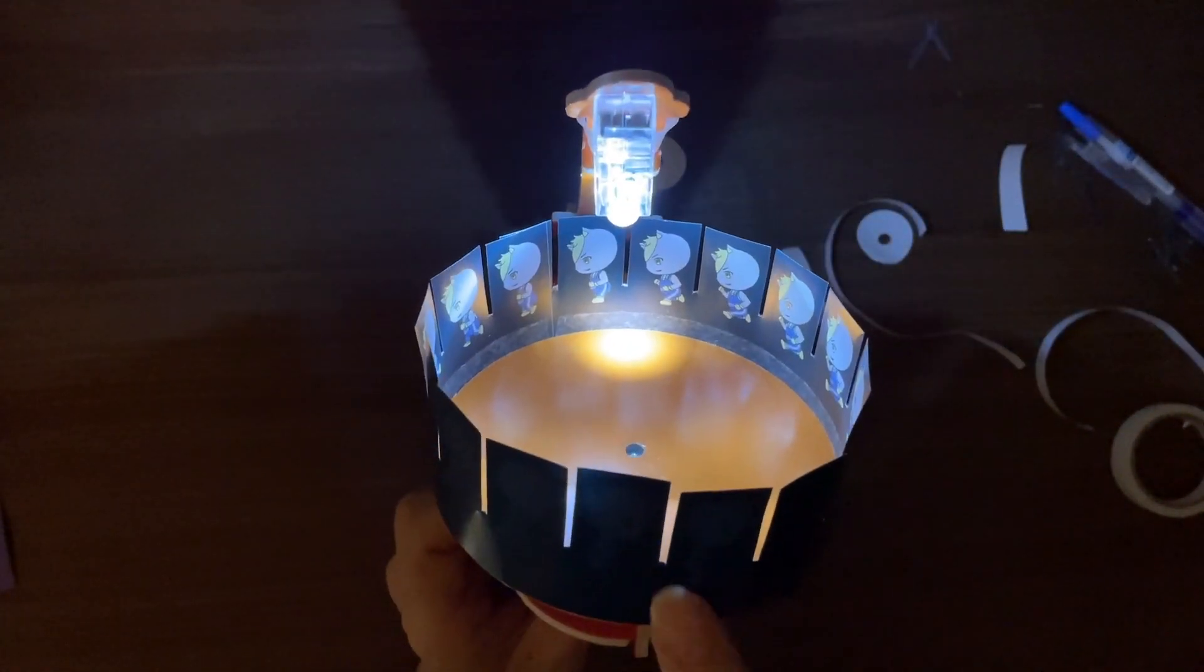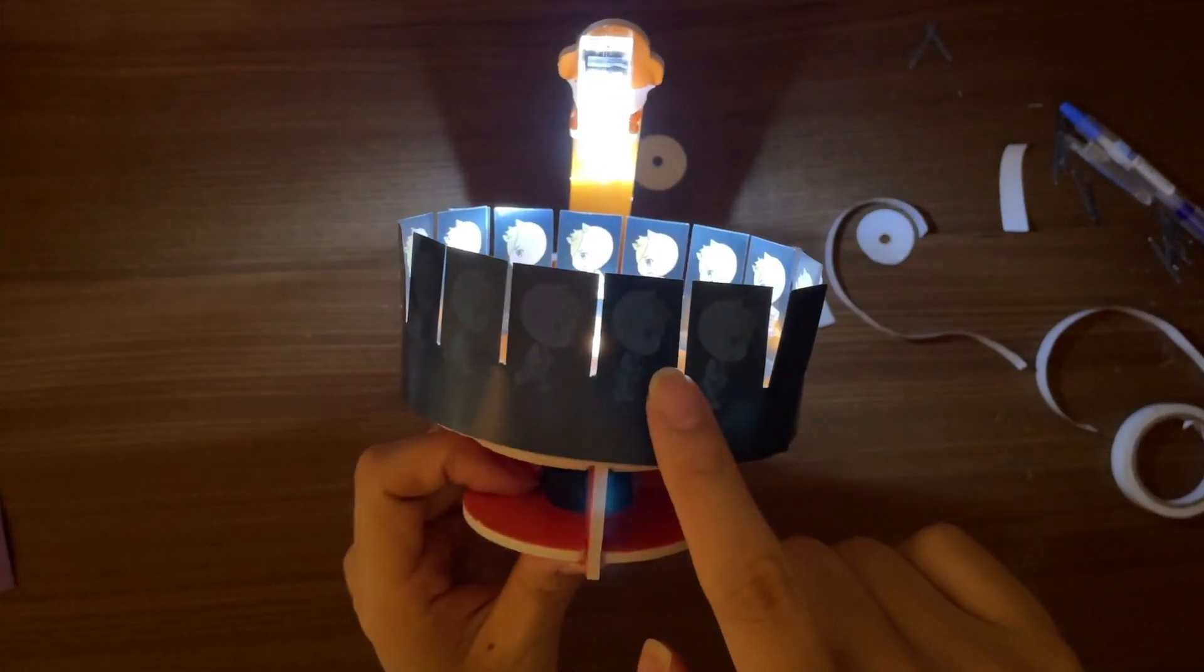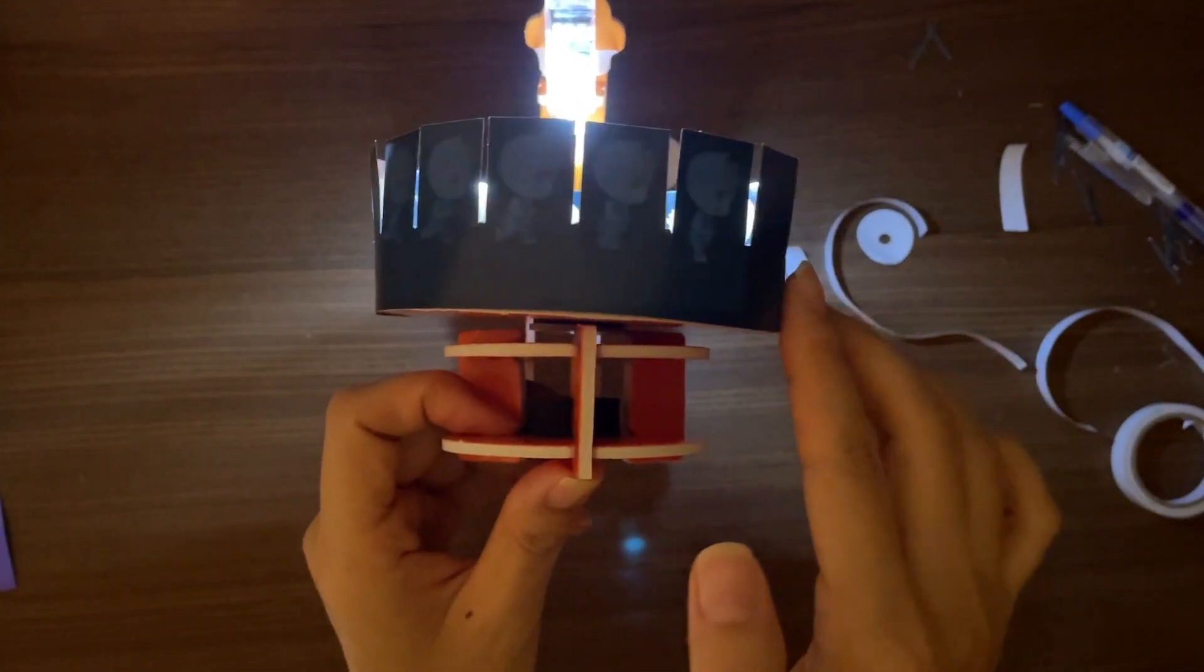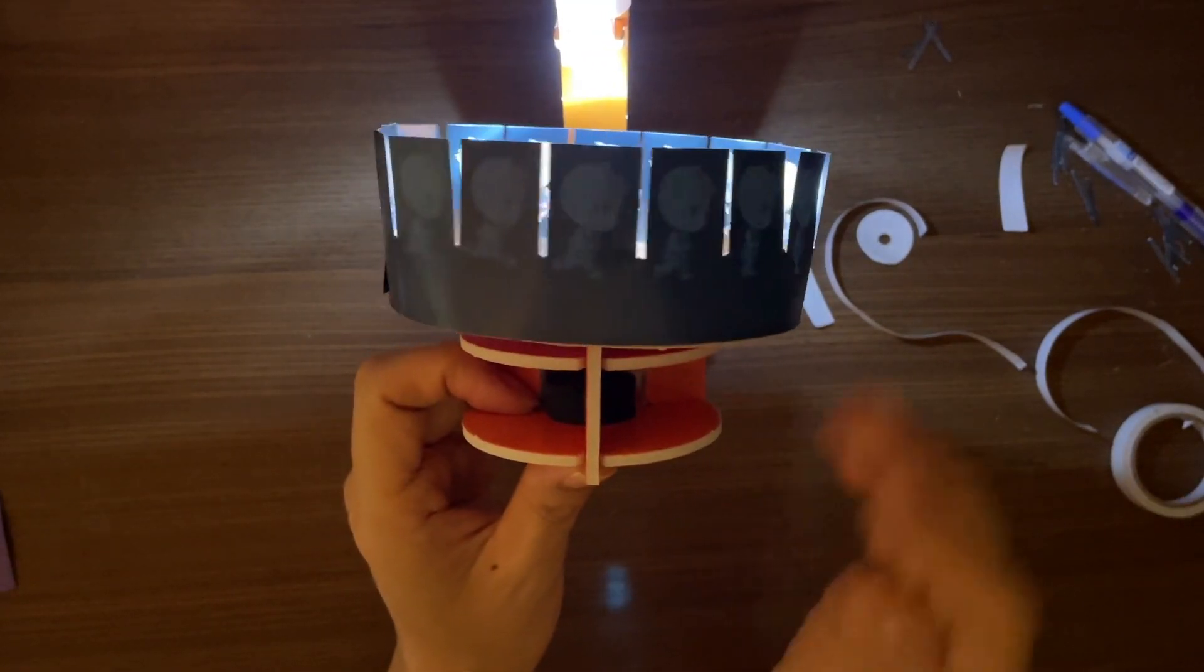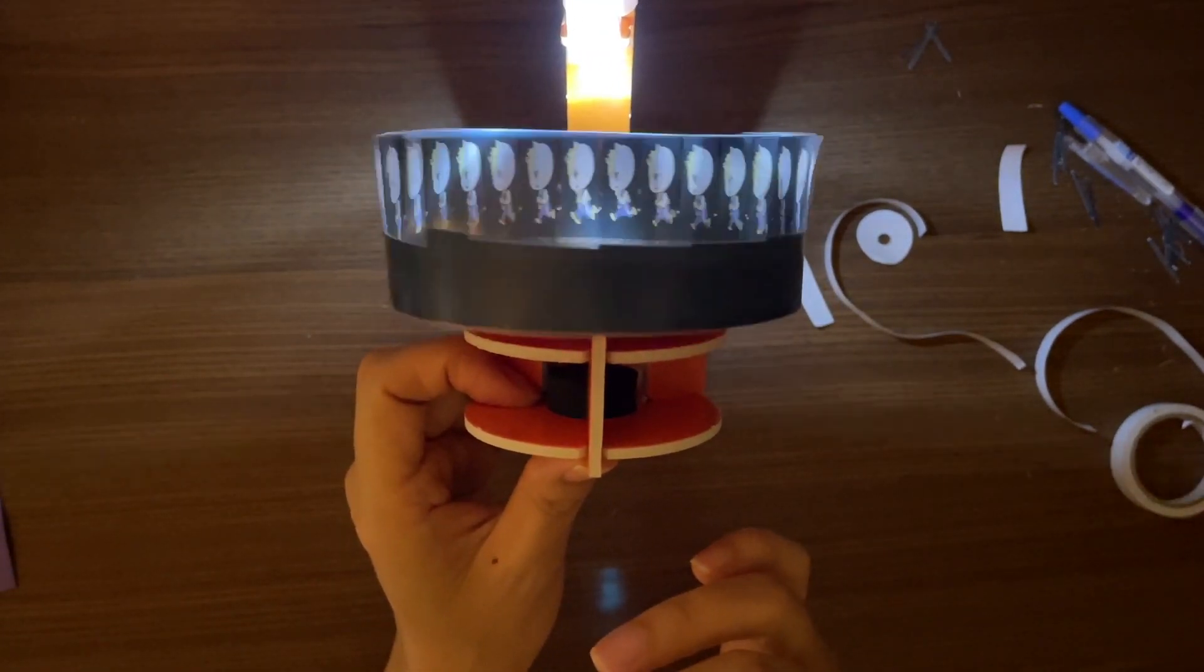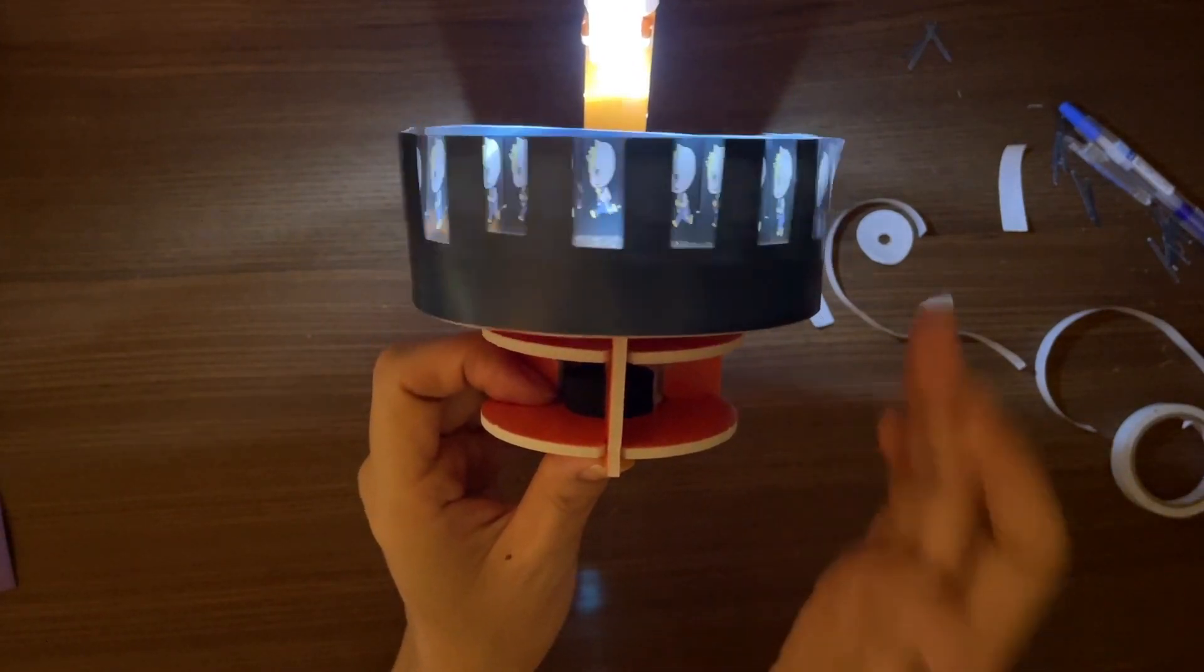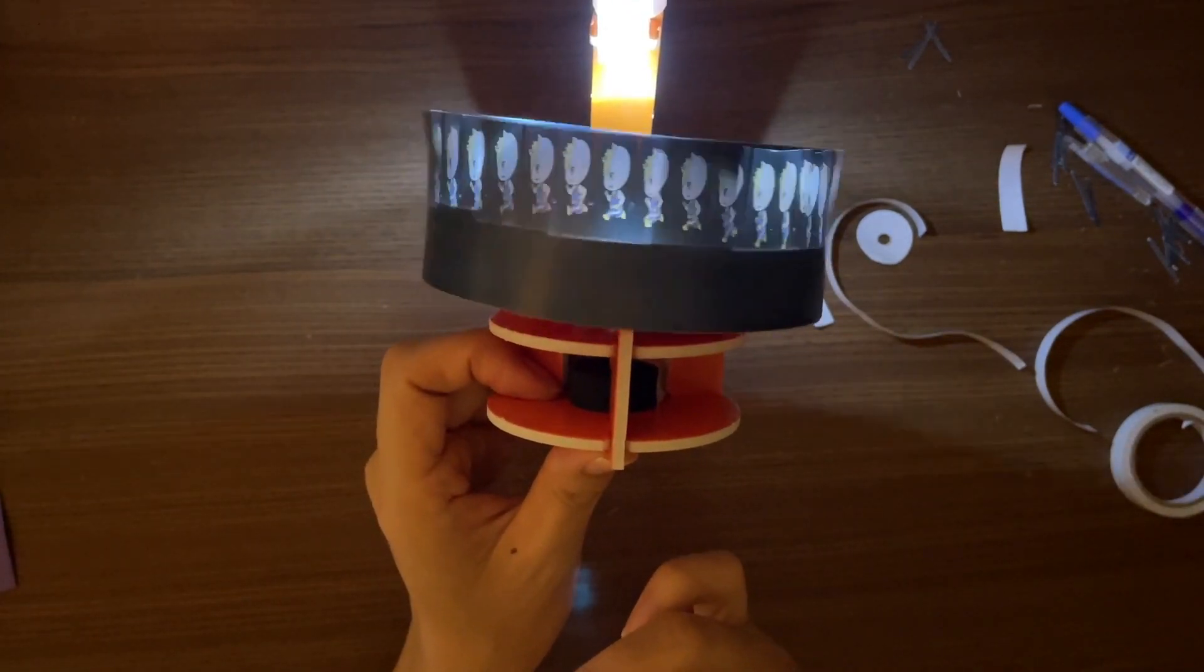Now let's look through the gaps. What do you see? The boy is running! We only put some pictures, and we spin the circle.